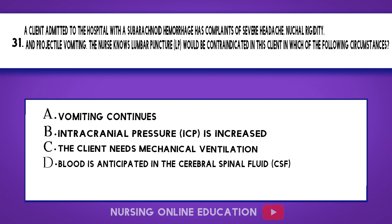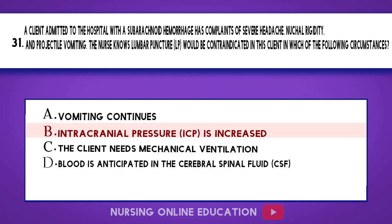Question 31. A client admitted to the hospital with a subarachnoid hemorrhage has complaints of severe headache, nuchal rigidity, and projectile vomiting. The nurse knows lumbar puncture (LP) would be contraindicated in this client in which of the following circumstances? A. Vomiting continues. B. Intracranial pressure (ICP) is increased. C. The client needs mechanical ventilation. D. Blood is anticipated in the cerebral spinal fluid (CSF). The answer is option B: Intracranial pressure (ICP) is increased.